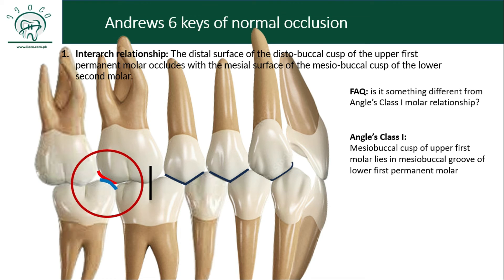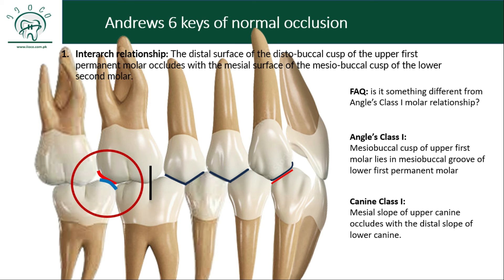Now this is something to understand — what is canine relationship. Engel based his classification on just the first molar. But Norman Kingsley introduced the canine relationship for the first time. According to him, when the mesial slope of the upper canine coincides with the distal slope of the lower canine, we can say the canine is in proper occlusion, or a Class I canine relationship. In other words, the upper canine is always positioned between the lower canine and the lower first premolar. Our topic was Andrews' six keys, and I have explained the first key while also relating it to Engel's classification.